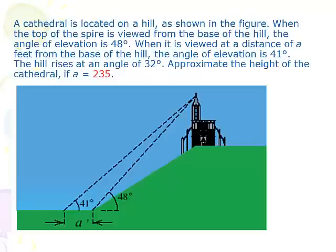Oh, a cathedral is located on a hill, as shown in the figure. When the top of the spire is viewed from the base of the hill, the angle of elevation is 48 degrees. When it's viewed from a distance of a feet from the base of the hill, the angle of elevation is 41 degrees. The hill rises at an angle of 32 degrees. Approximate the height of the cathedral, if a is 235.